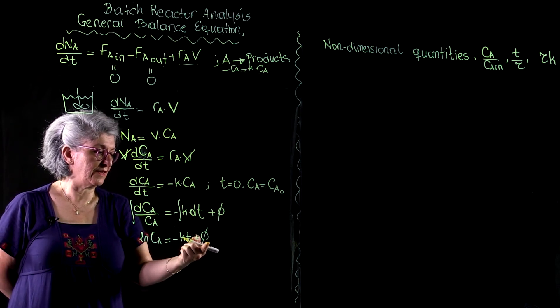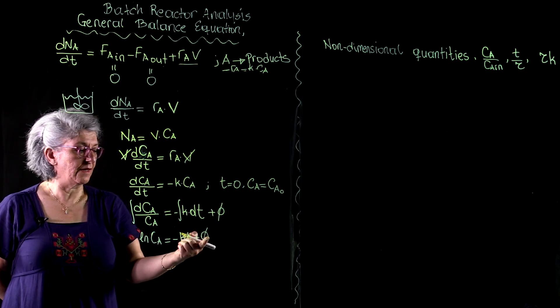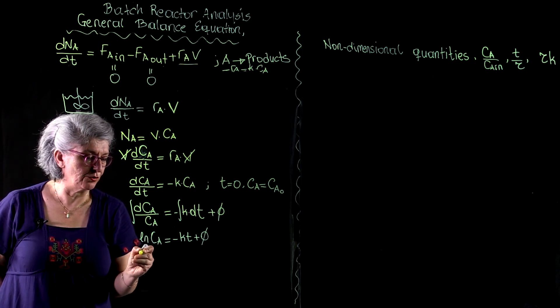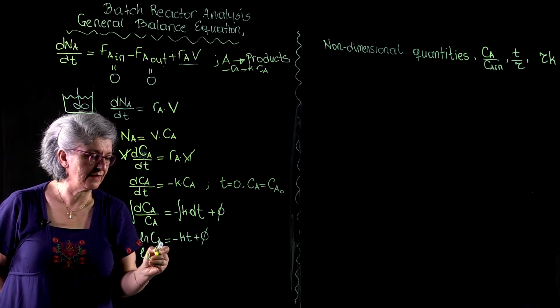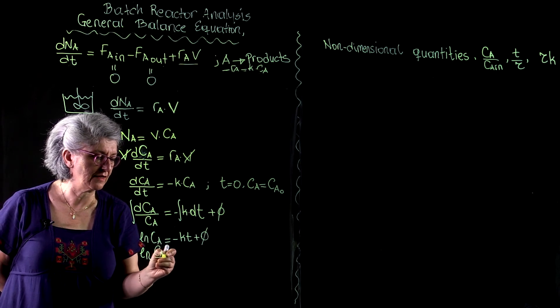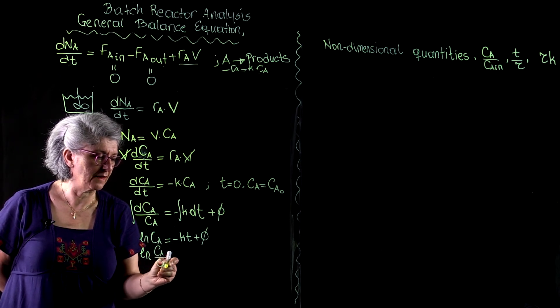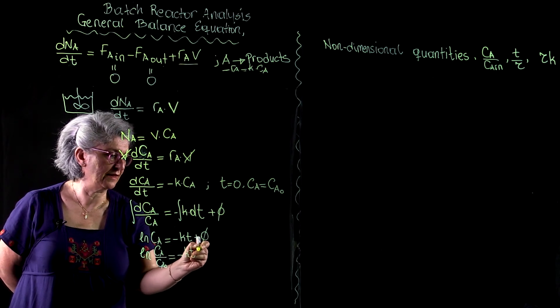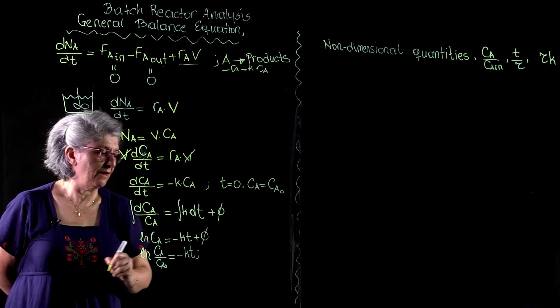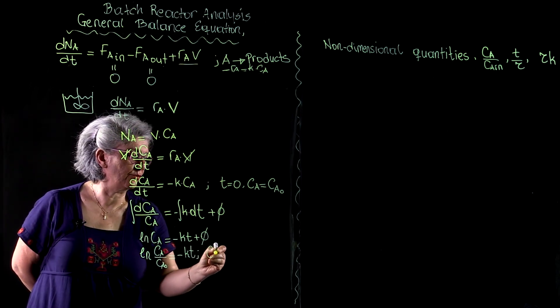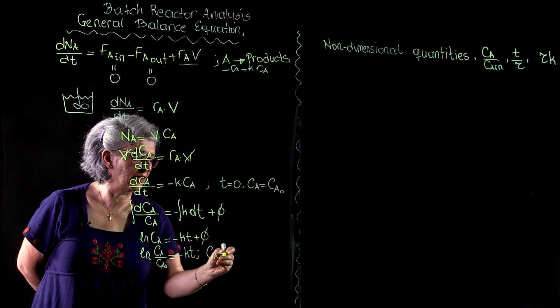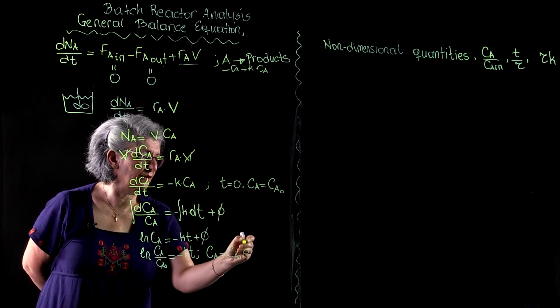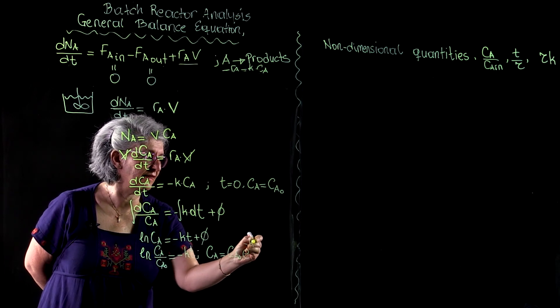So, on this side it is positive. If it comes here, it will be negative. We do the ln algebra, so it becomes ln(Ca over Ca0) equals minus K times t, or Ca equals Ca0 times e to the minus Kt.